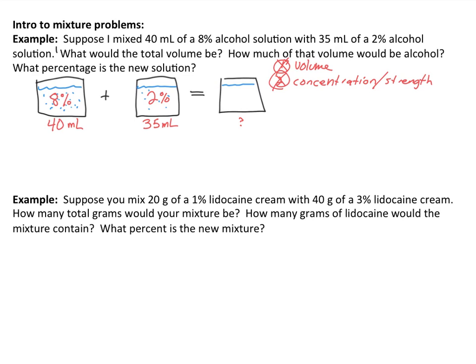The first question is: what is the total volume going to be once I mix them together? This really shouldn't be too challenging. I'm taking 40 milliliters and adding 35 milliliters, so that's going to produce 75 milliliters. That's all we need to do for that particular question — just calculate that when I mix these together, I'm going to produce 75 milliliters.